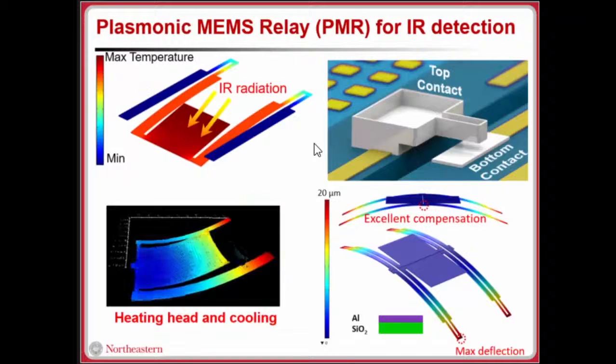Shown here is a temperature distribution simulation when you heat up the absorber with infrared radiation. As you can see, the biomaterial beam heats up and causes a deformation downwards. This video here was taken using a Lyncée Tech holographic microscope as the device is heated and cooled.